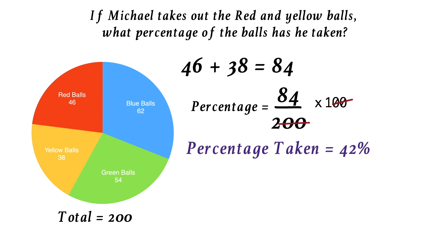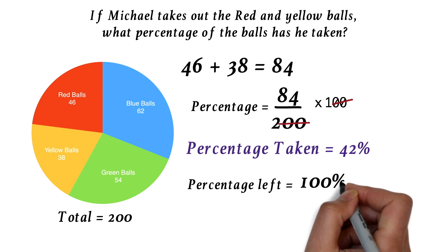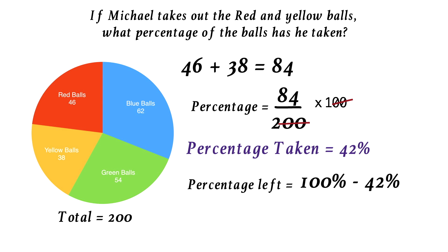Instead, being asked how much he's taken, you could have been asked the percentage that is left. We know he's taken 42% out of a total of 100%. So we can just subtract 100% minus 42%. This will give us 58%.